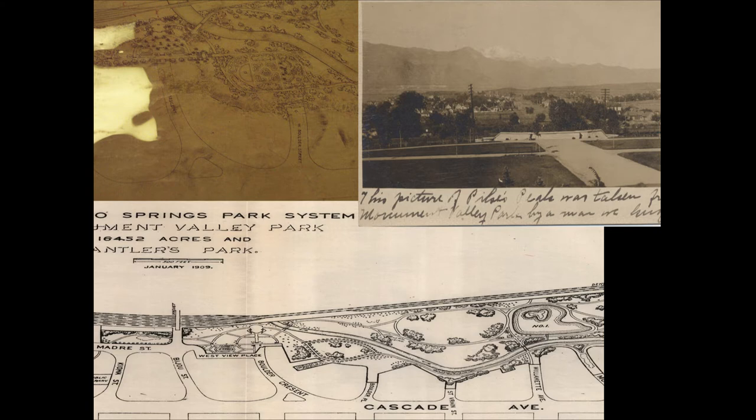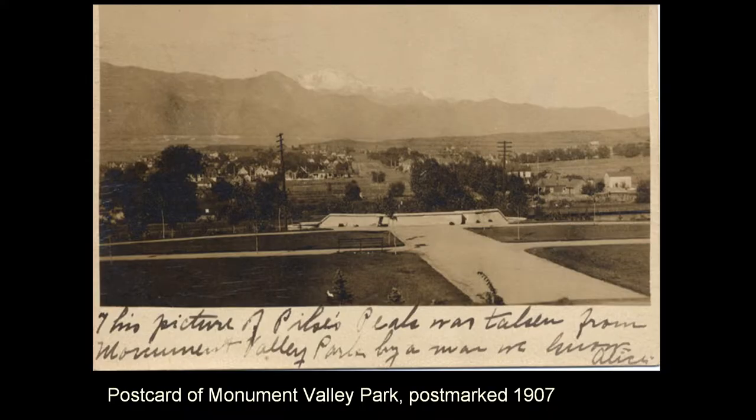This is the earliest postcard of the park, right next to Boulder Crescent — the bones of that area are still there. This same postcard is from 1907, which would have been the year the park was given to the citizens of Colorado Springs. There's a rose garden down there.